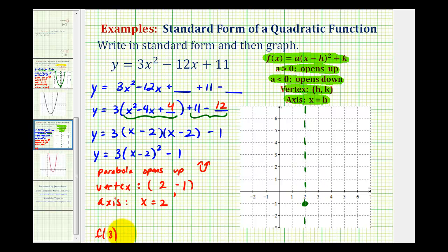F of 3 would be equal to 3 times the quantity 3 minus 2 squared. Well, 3 minus 2 is 1, so we have 1 squared minus 1. Well, 1 squared is 1 times 3 is 3 minus 1 is equal to 2. So if f of 3 is equal to 2, we know that the parabola must contain the point with an x-coordinate of 3 and a y-coordinate of 2, which would be this point here. Notice how this point is one unit to the right of the axis of symmetry, so there must also be one point, one unit to the left of the axis of symmetry, which would be this point here.